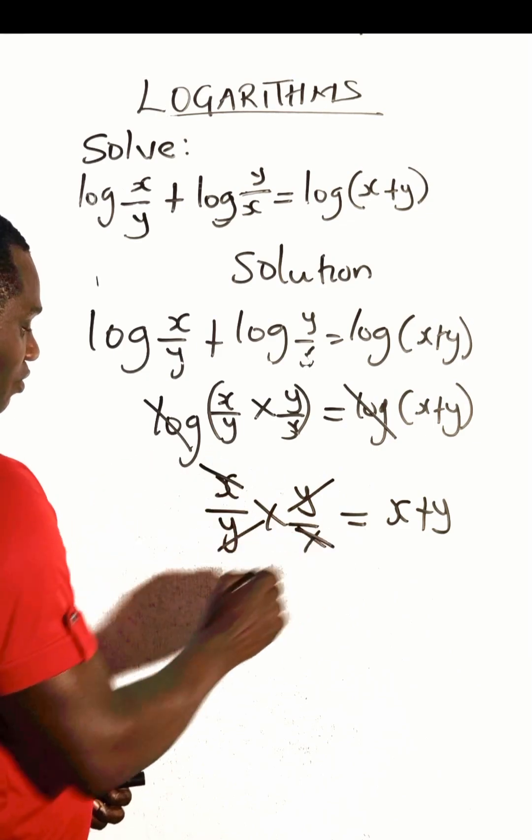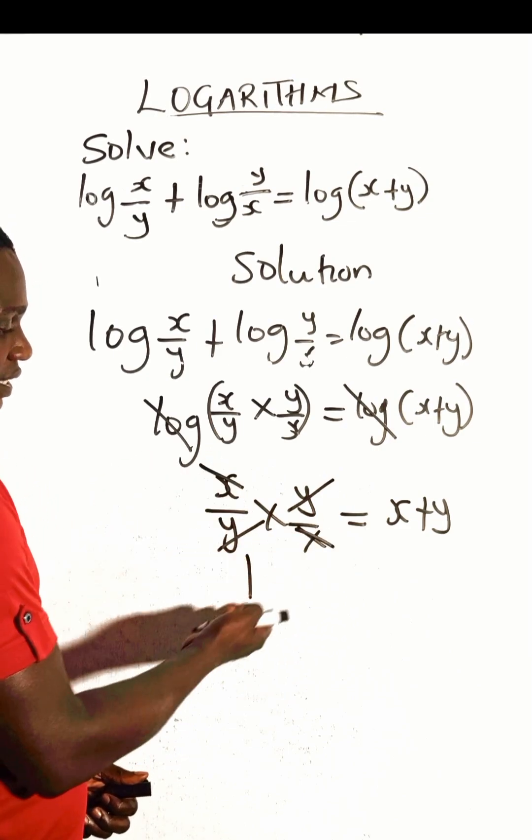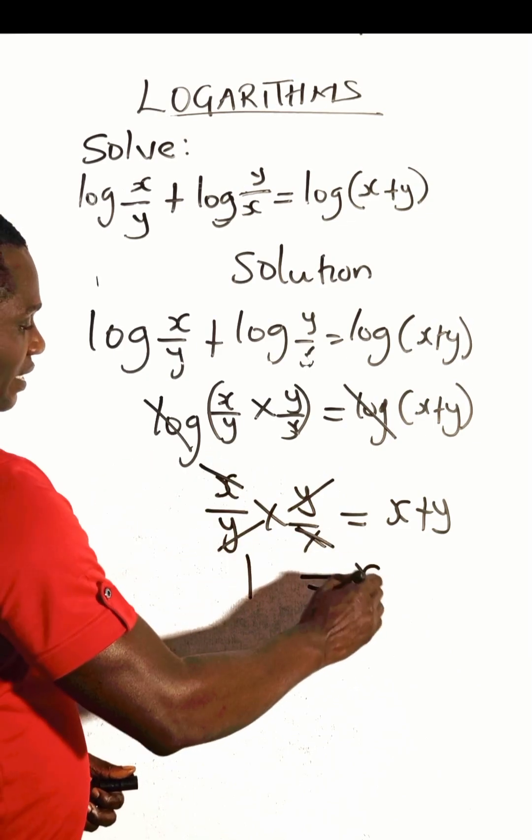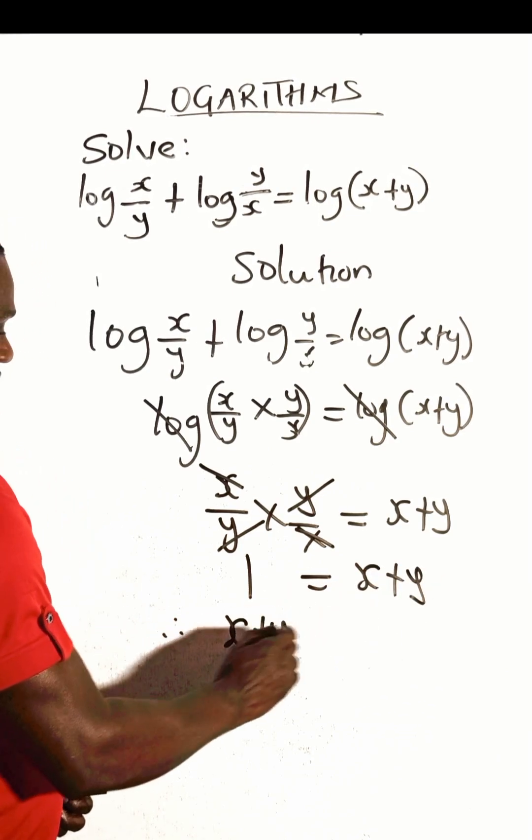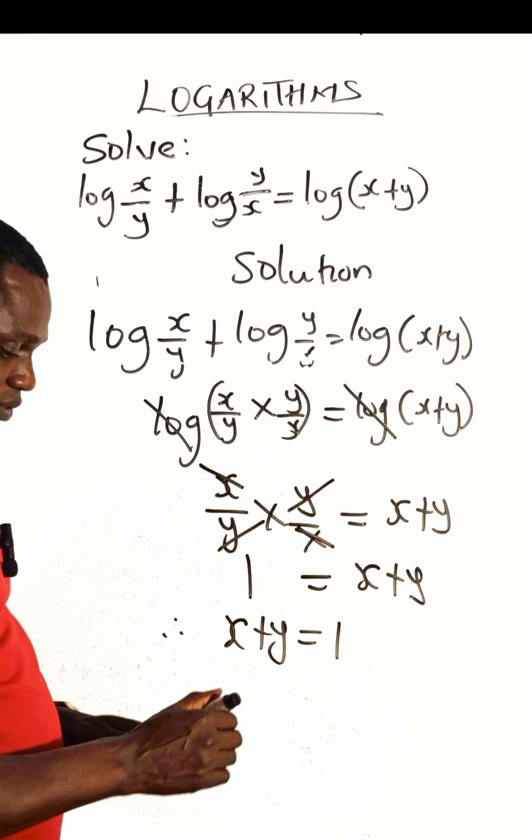These can divide each other to give you one. Your left-hand side will give you one, then the right-hand side will be just x plus y. Therefore, we say that x plus y is equal to one.